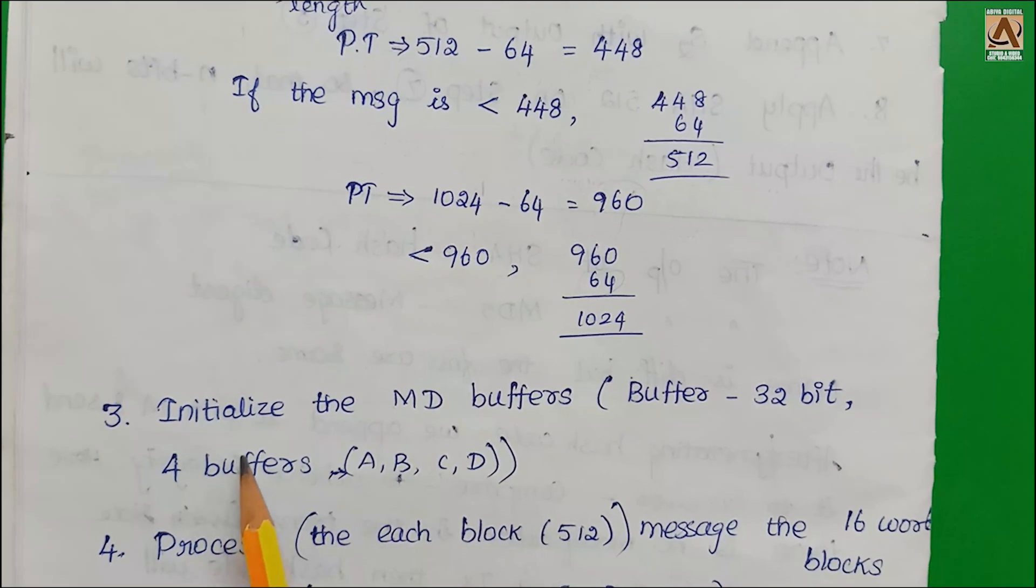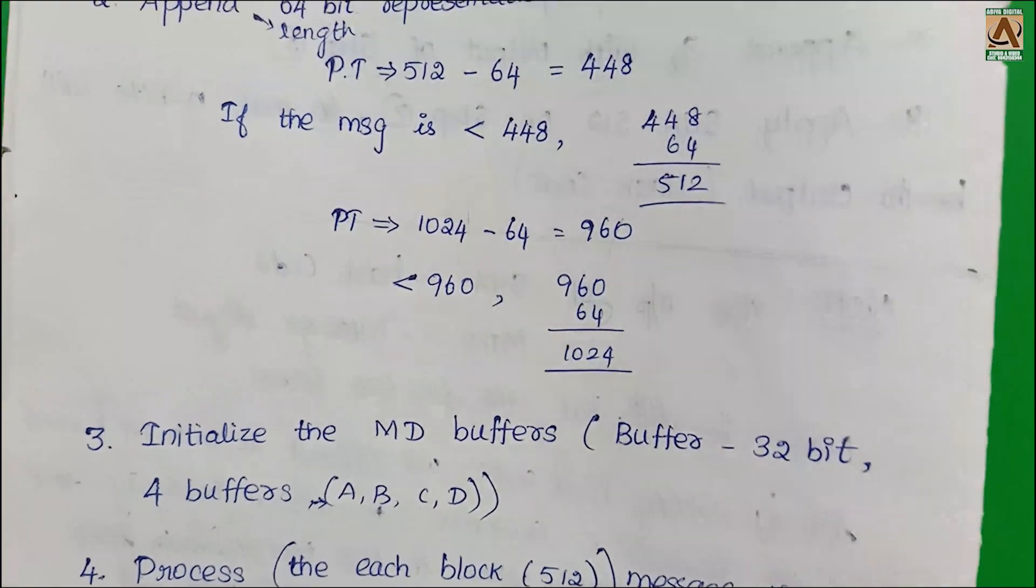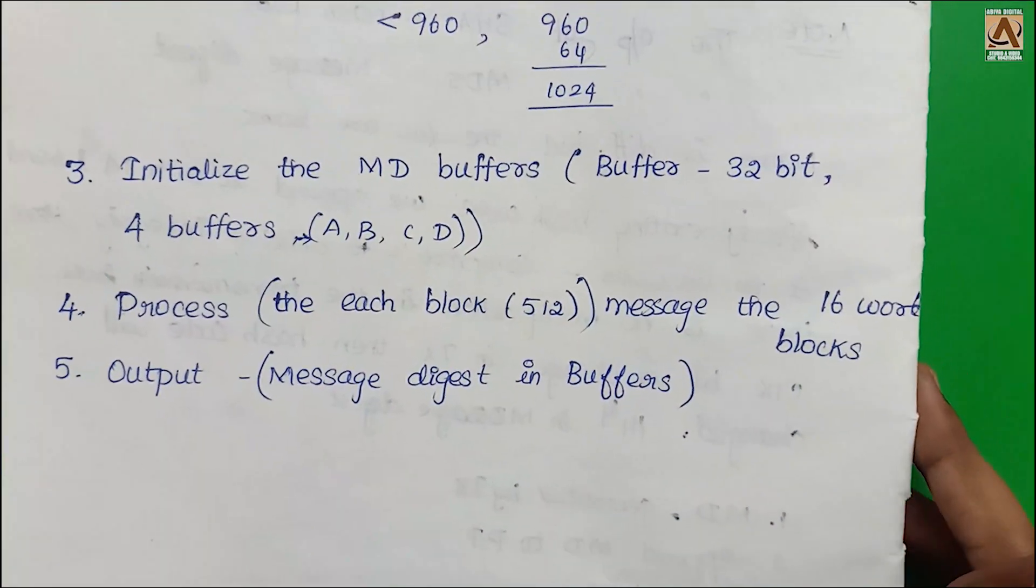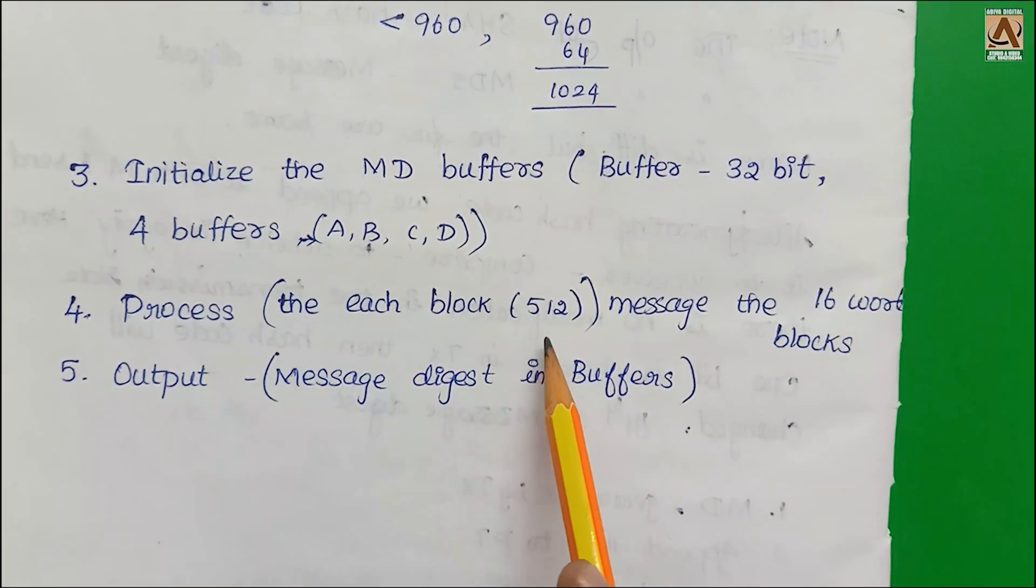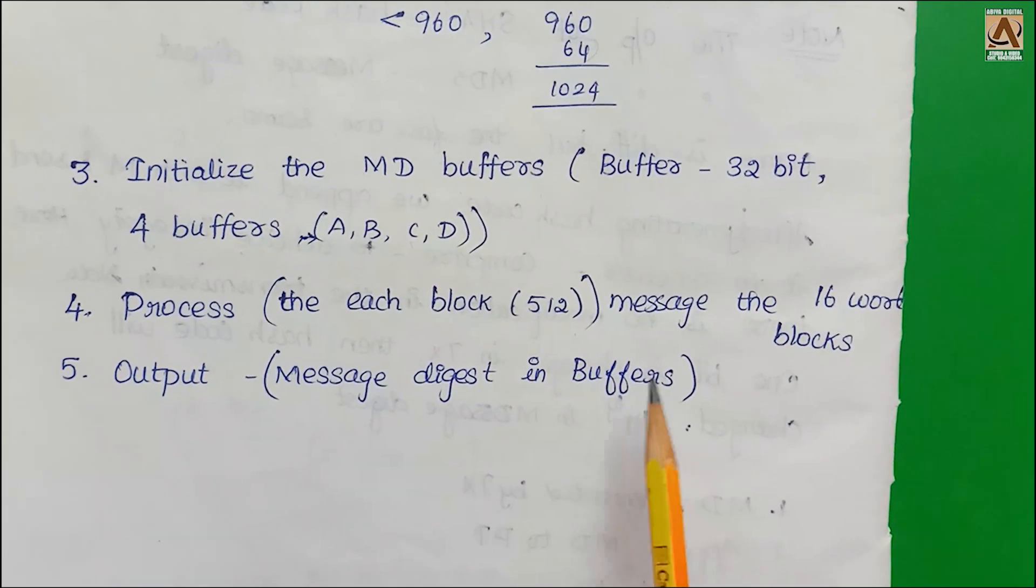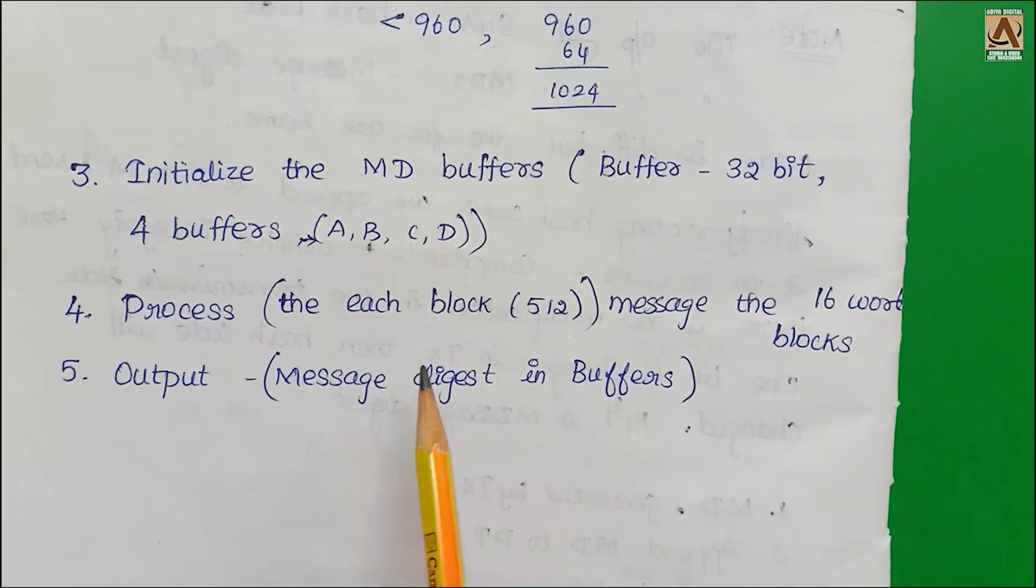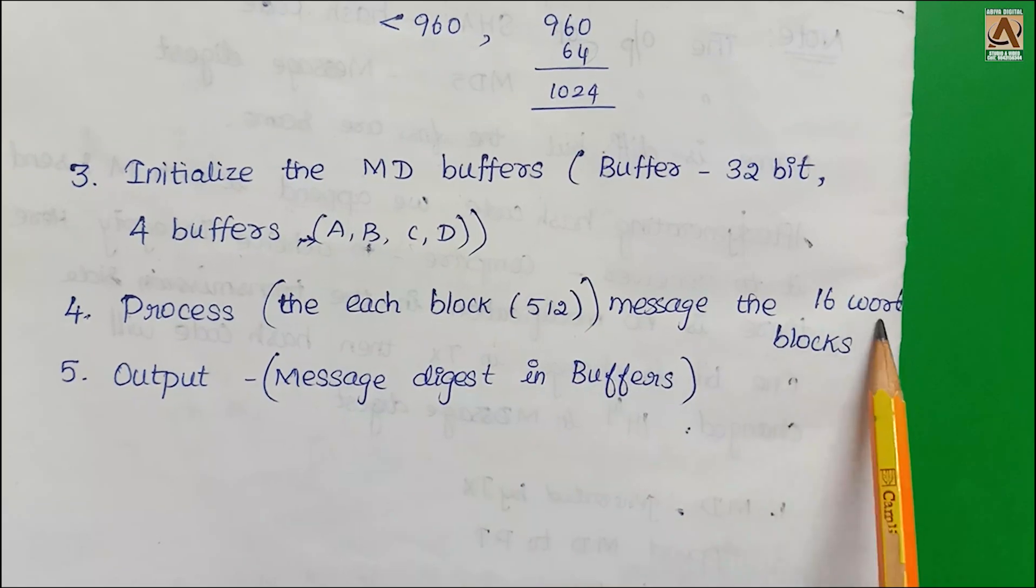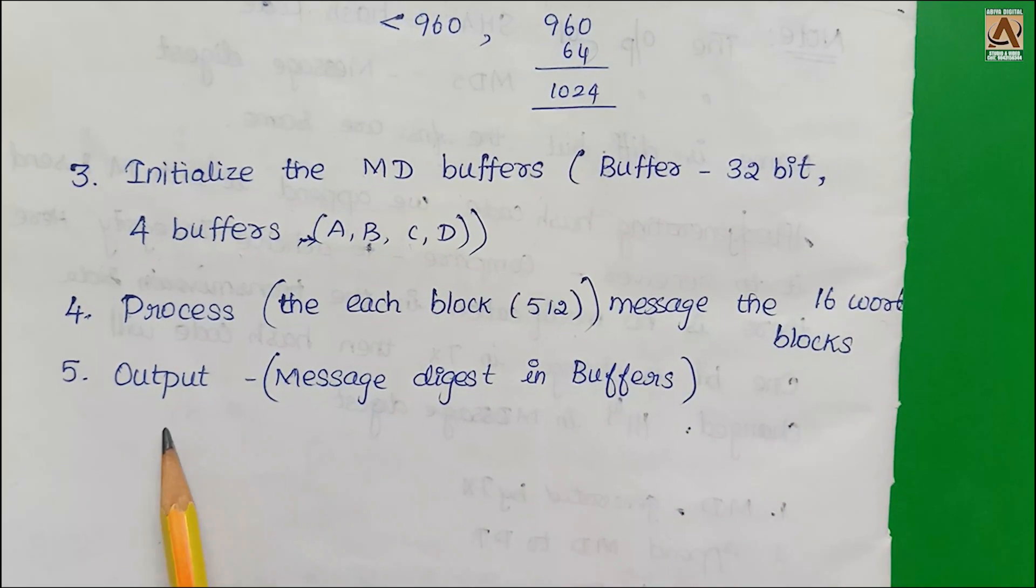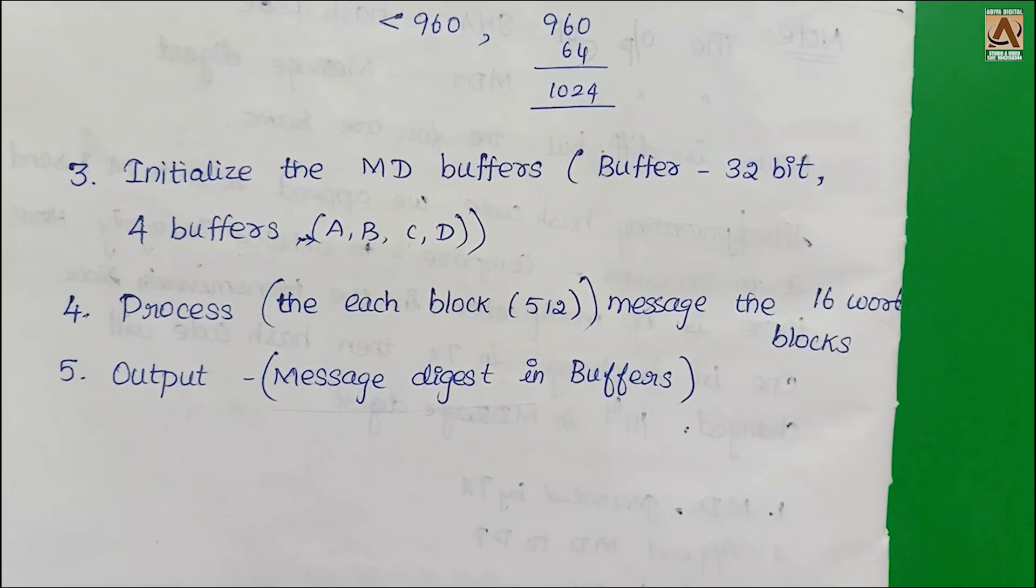Third, initialize the MD5 buffer. One buffer size is 32 bits with 4 buffers: A, B, C, D. Next, process each block. Each block is 512 bits, giving 16-word blocks. We get the message digest in the final 4 buffers.